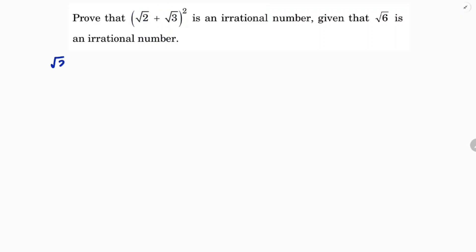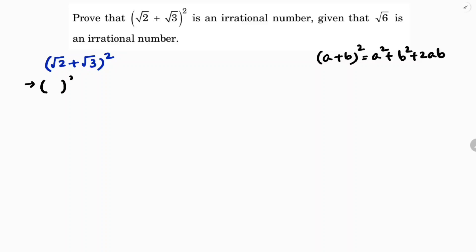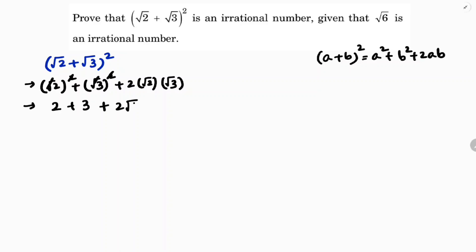(√2 + √3)² is in the form of (a + b)², which equals a² + b² + 2ab. Here a = √2 and b = √3. So we get (√2)² + (√3)² + 2·√2·√3 = 2 + 3 + 2√6 = 5 + 2√6.